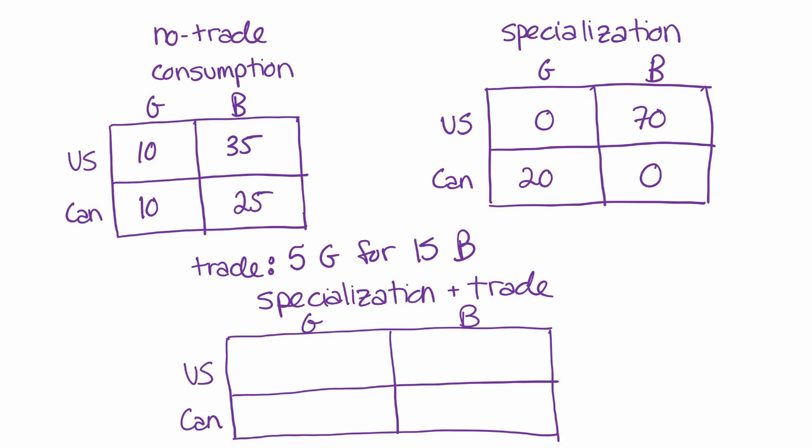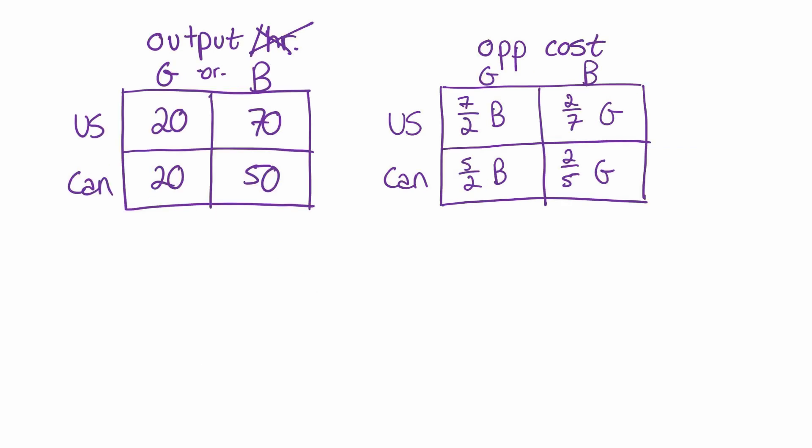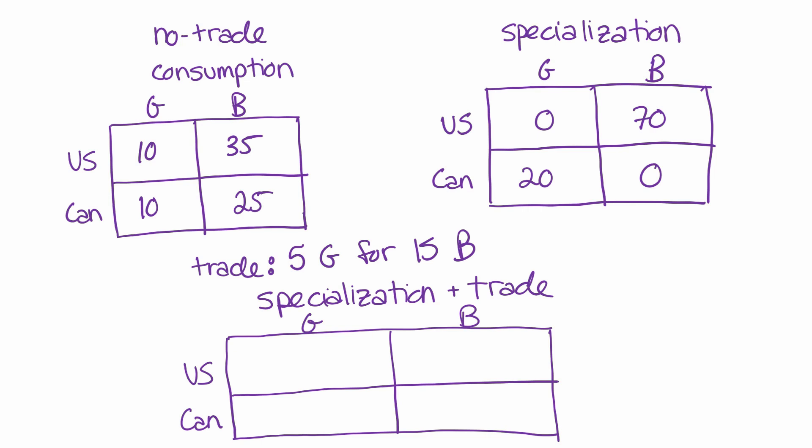And we can see based on that that the price is actually right. We say that a trade can make both parties better off if the price of the trade is between the opportunity costs of the parties involved in the trade. If you recall the opportunity costs of producing a gun for the US was 3.5 and for Canada was 2.5 and three is in fact between those two numbers. So in terms of the price, this trade is looking good.